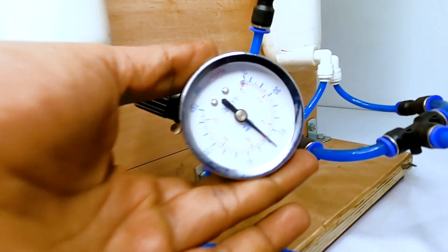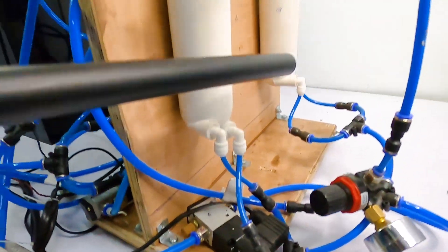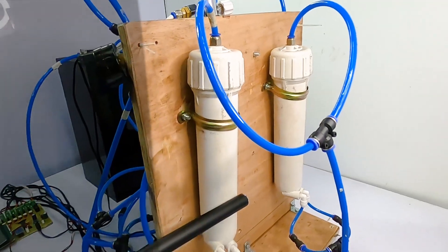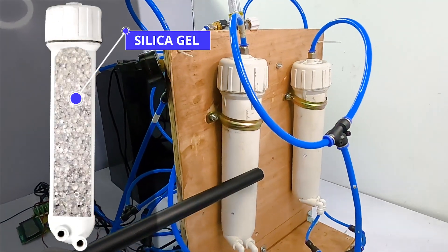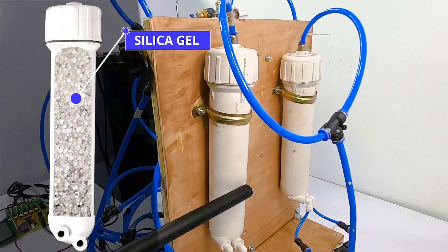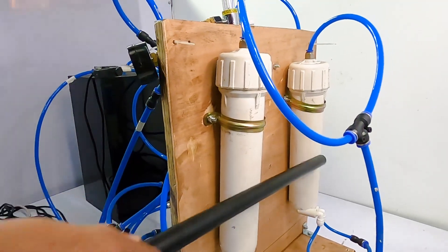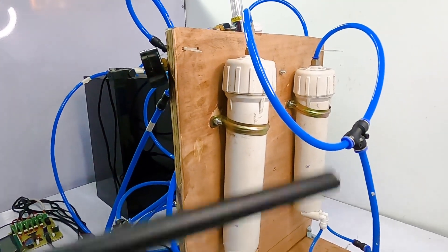So this air is supplied to the silica gel cylinders. These two cylinders, as you can see here, are used to filter out moisture content from the input air so that we get moisture-free air which can be supplied to the other cylinders.